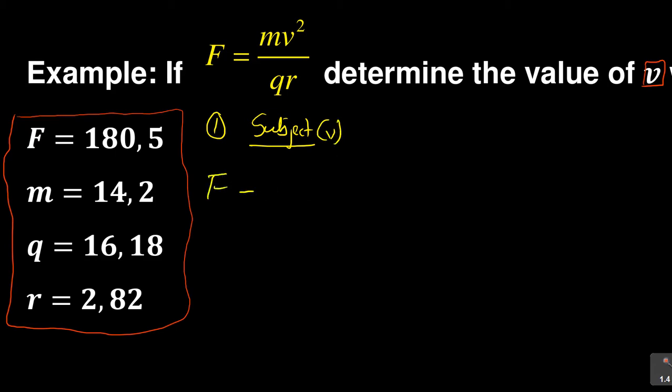What am I given? I'm given F = mv²/qr. Now the moment I'm given a fraction on my right-hand side, what I always encourage students to do is when you're given a fraction on one side, you also divide the second side by one so that you have fraction versus fraction. When you've got fraction versus fraction, you can then do what we call cross multiply.